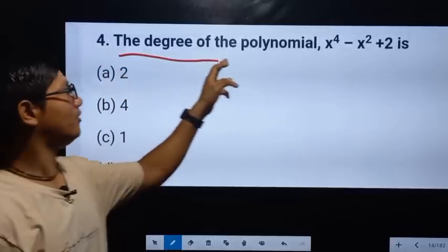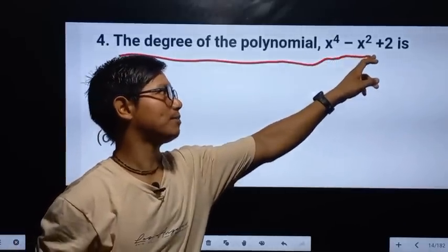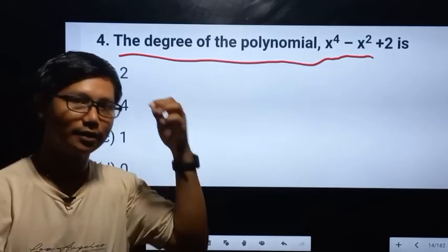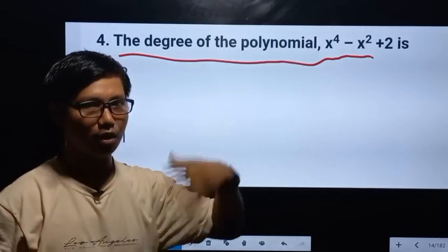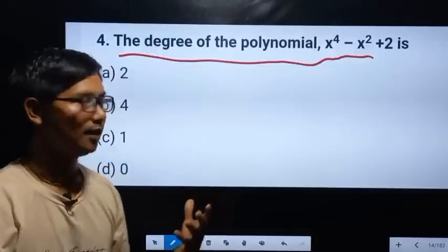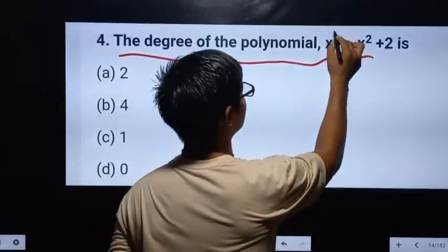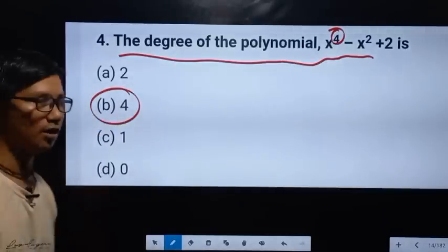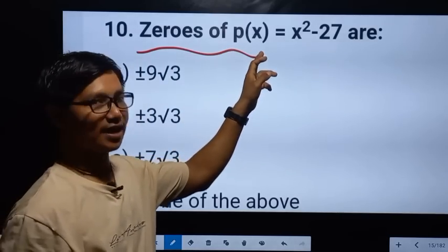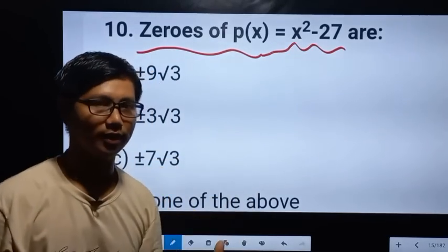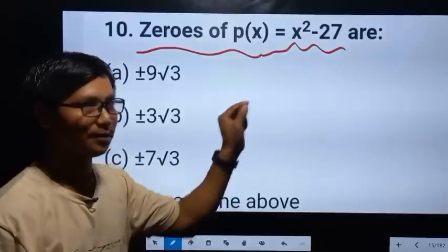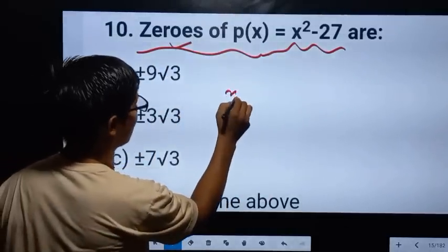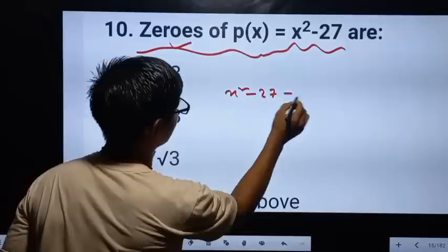The degree of the polynomial x to the power 4 minus x squared plus 2x. x squared minus 27 is equal to 2x. 0 minus 8 is equal to 2x. x squared minus 27 equals 0 minus 7.